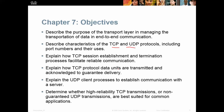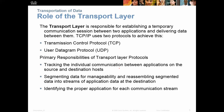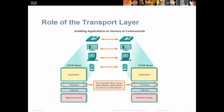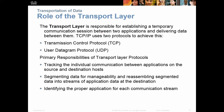The role of the transport layer is to transport data between applications on devices in the network. This is the TCP/IP model, not the OSI model. The transport layer works between the application layer and the internet layer, and is responsible for establishing a temporary communication session if you have a connection-oriented protocol, and delivering the data between them.